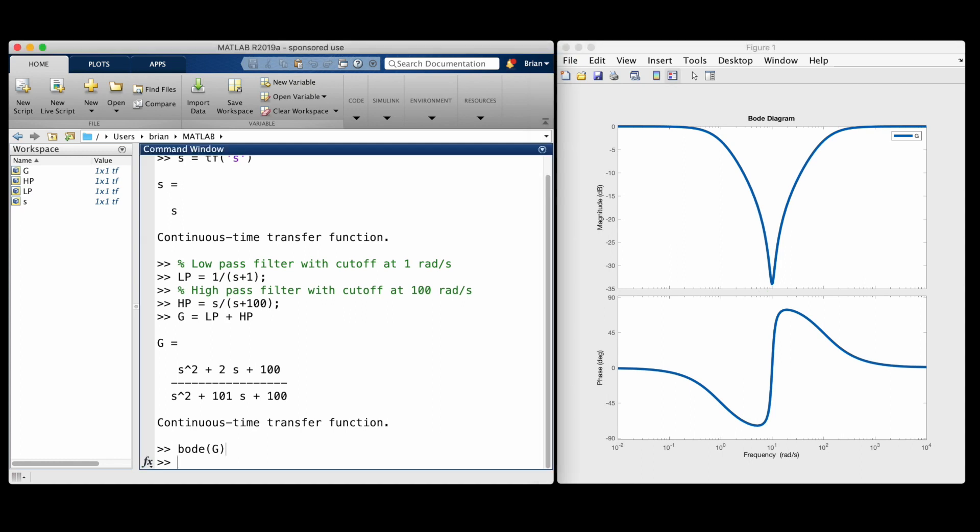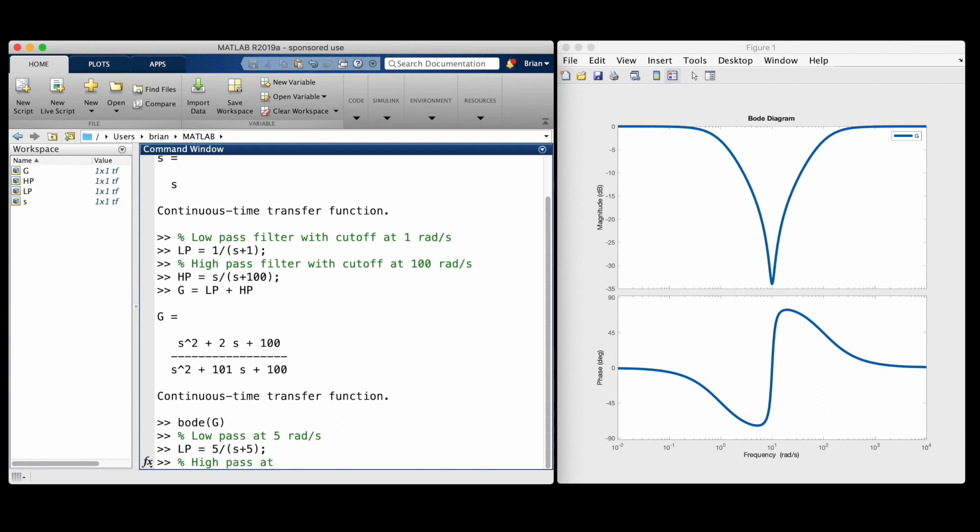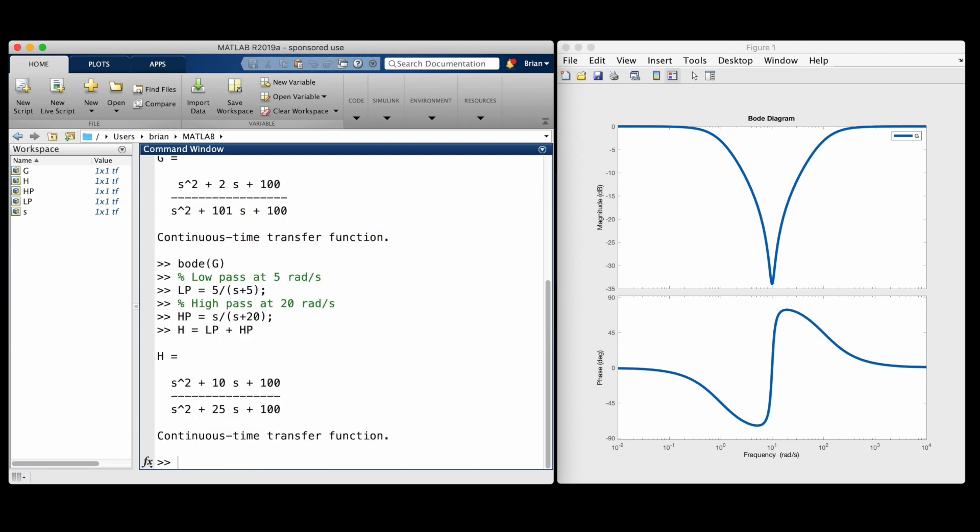But now, what happens when I move the low-pass and high-pass filters inward, so that the band is between, say, 5 and 20 radians per second?